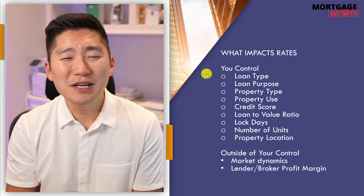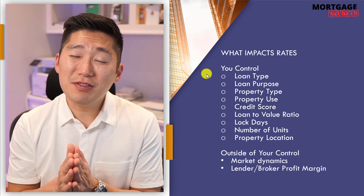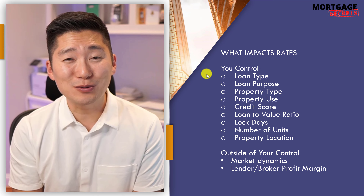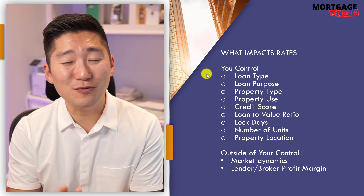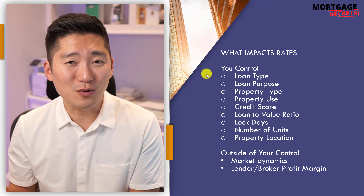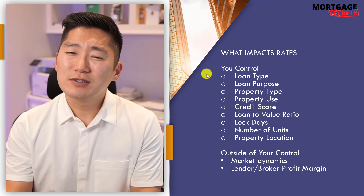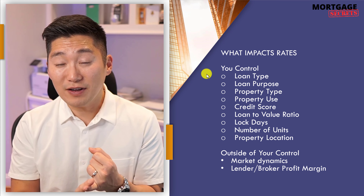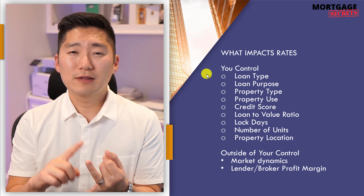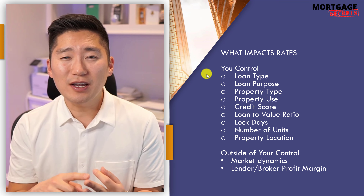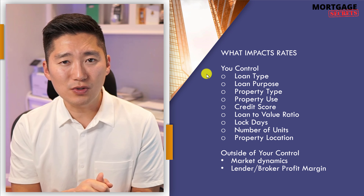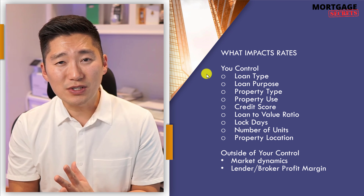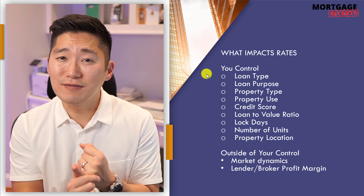Having gone through all these categories, you're probably wondering: what is the ultimate best scenario to get the best rate for each? I'm going to share that just for the conventional loan, since I can't go through all loan types — conventional, VA, FHA, USDA, and jumbo non-conforming. So I'll focus on conventional.